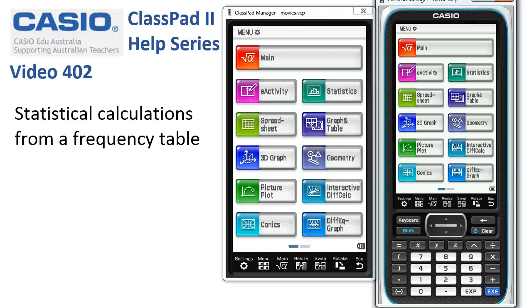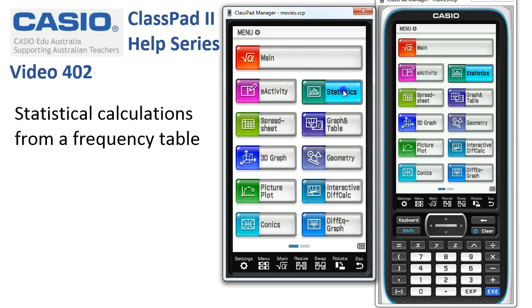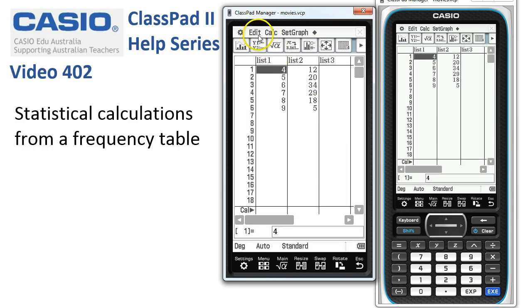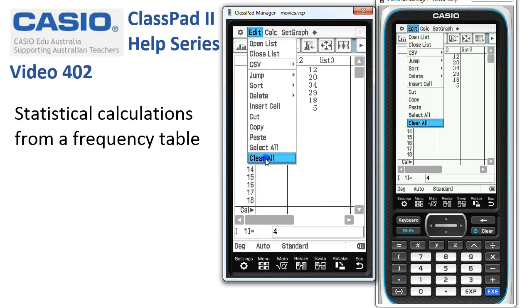Statistical calculations from a frequency table. We'll head into the statistics application and normally we tap on Edit, Clear All to start off with, to clear out the data, reset everything, and then put our numbers in.